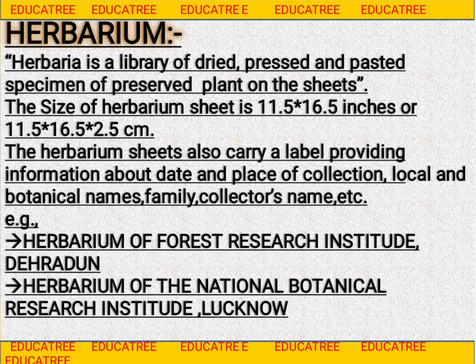The herbarium sheet mein ek label laga hota hai, jis par us plant ki poori information hoti hai — jaise aapne use kis date mein collect kiya, place of collection matlab kahan se collect kiya, local name matlab us particular area mein use kya naam diya gaya hai, aur botanical name matlab ICBN ke according use kya naam diya gaya hai. Usse aap uski family bhi bata sakte hain, aur collector name — jis individual ne use collect kiya uska naam mention kiya jata hai.